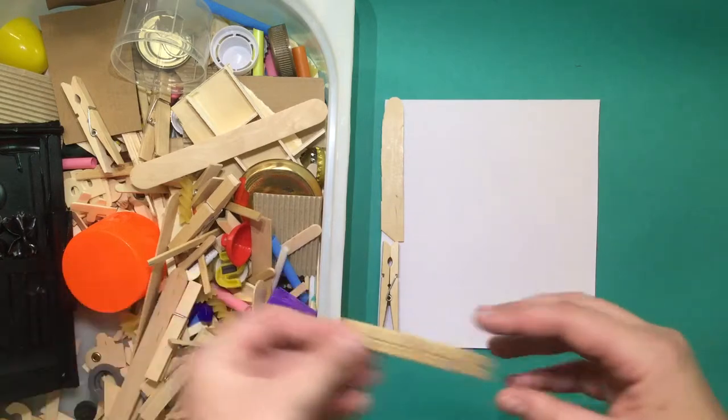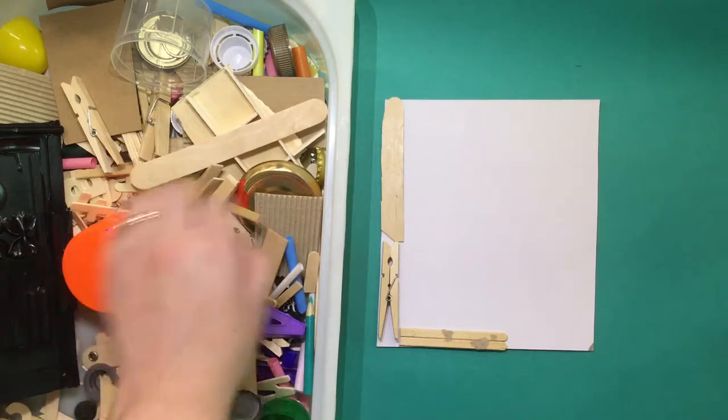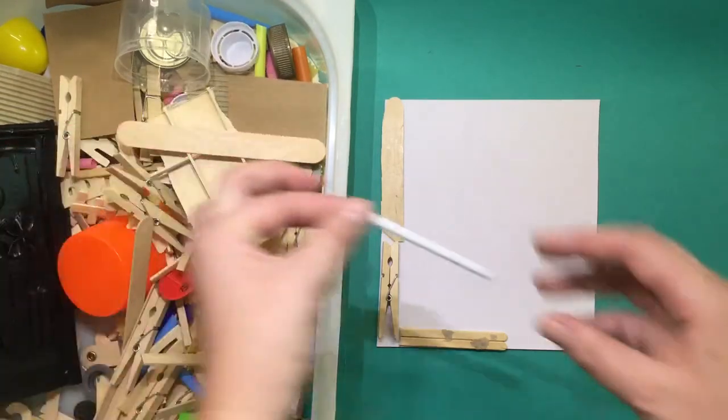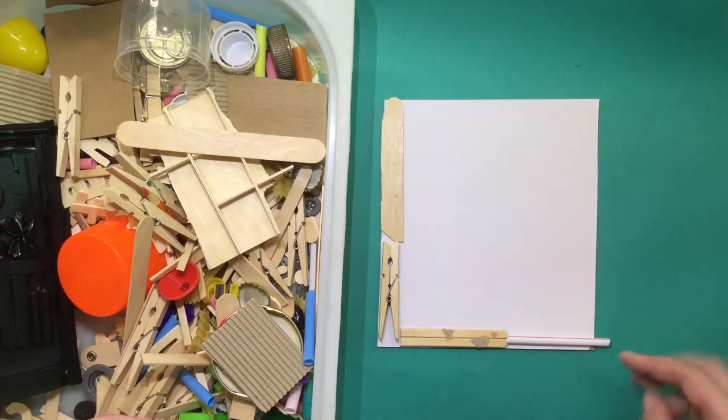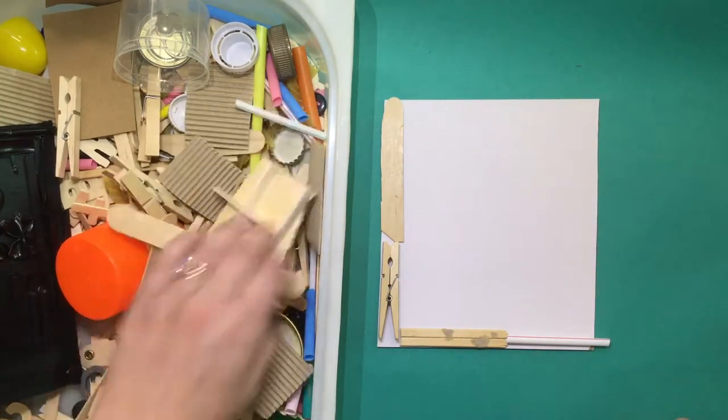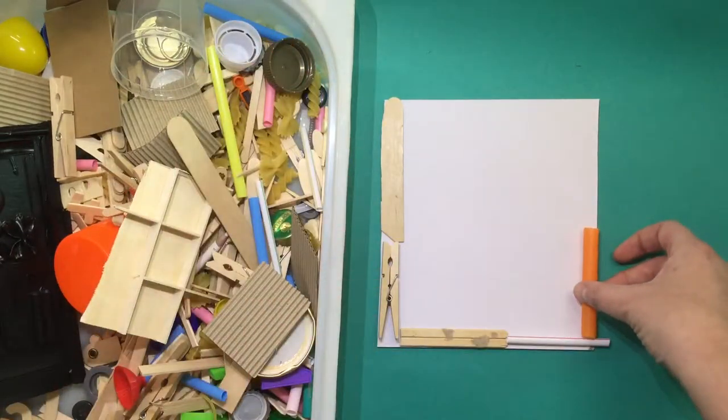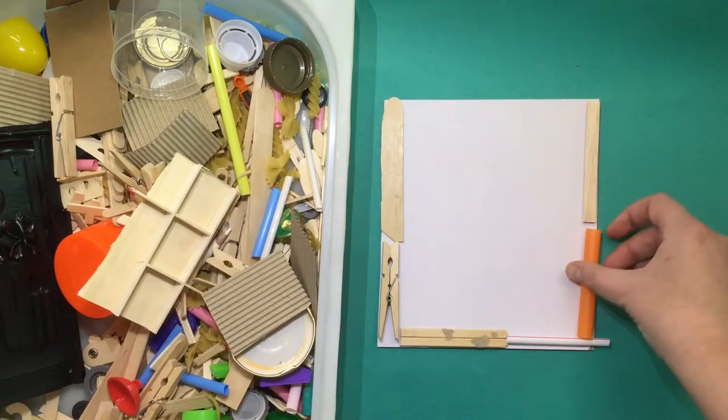Lay them out first before you glue them down to see how they fit with each other. If you're using straws, you're even able to cut the straws if they're too long. You're gonna do this all the way around the outside of your square.